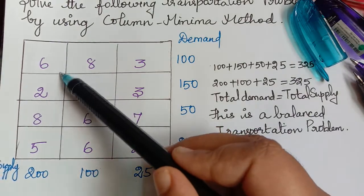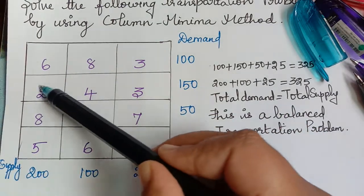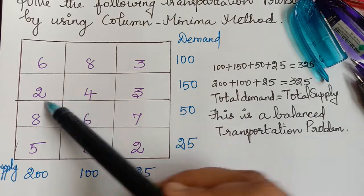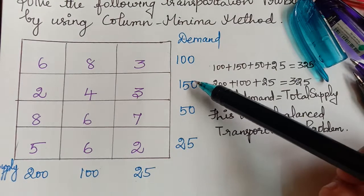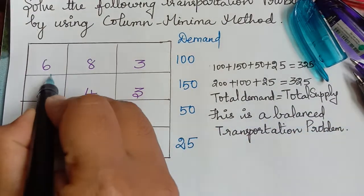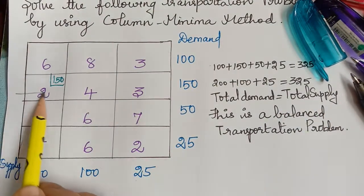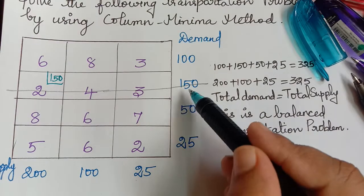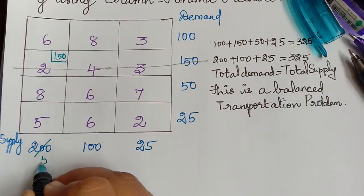In the first column, we identify the least element. We have 6, 2, 8, and 5, so the least element is 2. We make an allocation for this cell. The corresponding demand is 150 and the supply is 200, so the minimum of these two is 150. We allocate 150, then strike off the row from which we made the allocation. Subtracting 150 from the supply of 200 leaves a balance of 50.